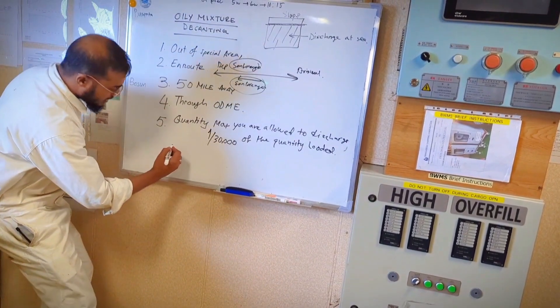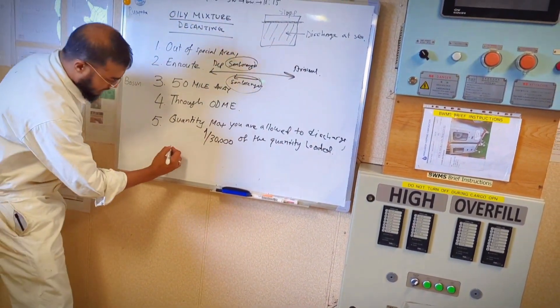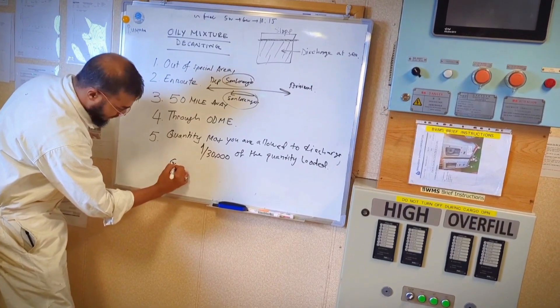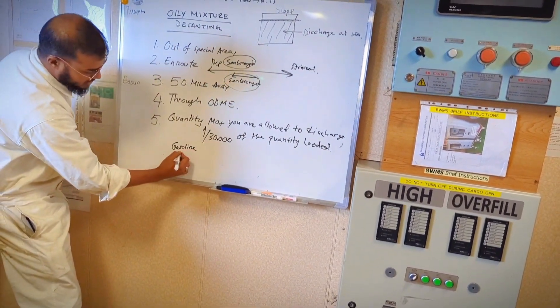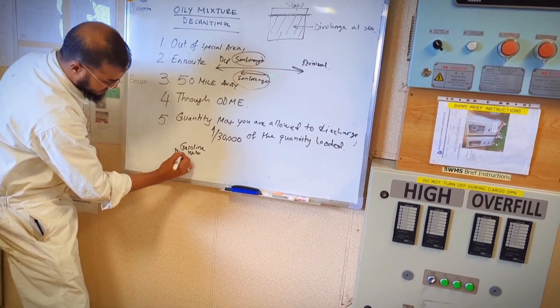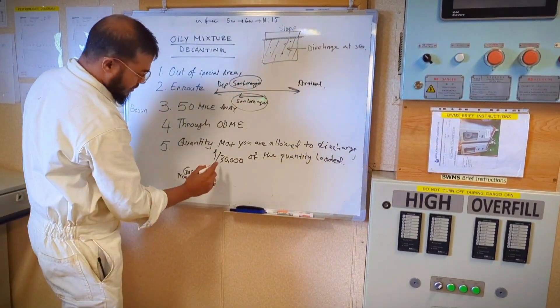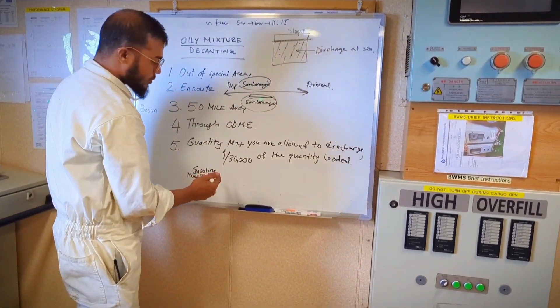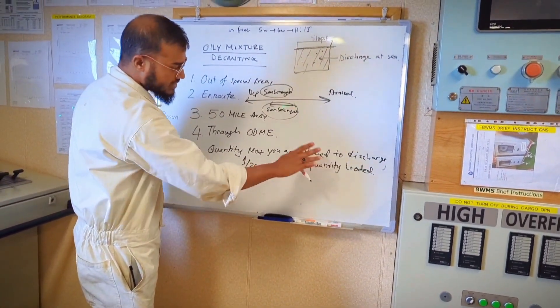This means if you - like now we are decanting gasoline cargo, so gasoline is mixed with water now in my slop tank, and I am allowed to dispose maximum 1/30,000 of the quantity loaded.